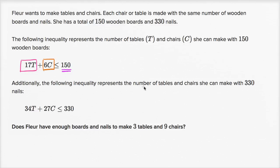The following inequality represents the number of tables and chairs she can make with 330 nails. She has a maximum of 330 nails. It looks like she needs 34 nails per table, so the total nails from tables is 34 times the number of tables. And she needs 27 nails per chair, so the total nails from chairs are 27 nails per chair times the number of chairs.